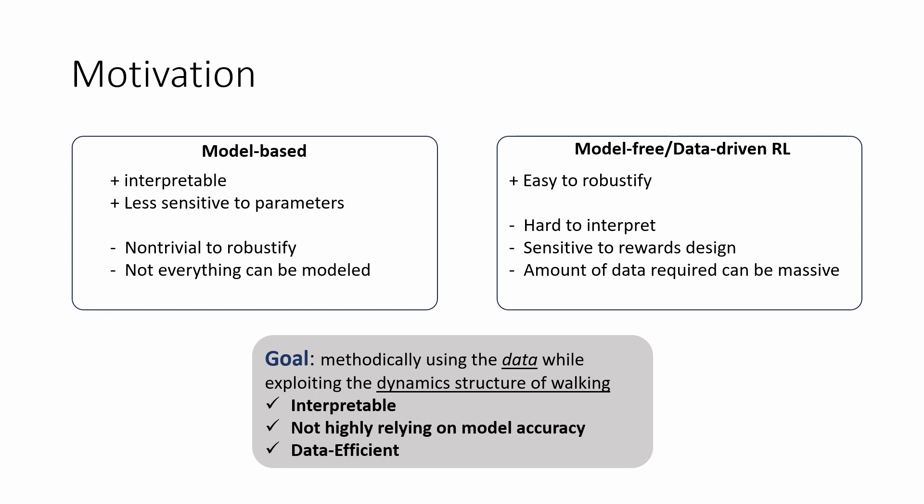On the other hand, reinforcement learning operates as a black-box algorithm, posing challenges in selecting appropriate gains and requiring a substantial amount of data for effective training. However, RL is excellent at making policies more robust against uncertainties both in environments and in robot dynamics.